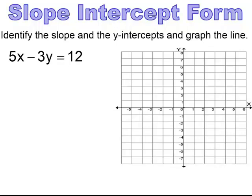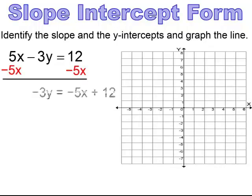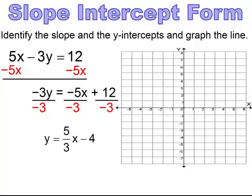Pause and try. Subtract 5x from both sides, then divide through by negative 3 to get y equals 5/3 x minus 4. Now graph it using slope and intercept: plot the intercept, count 5 up and over to the right 3, and graph the line.